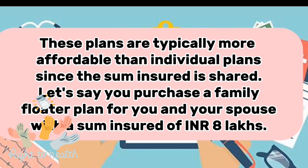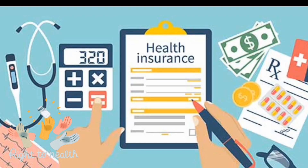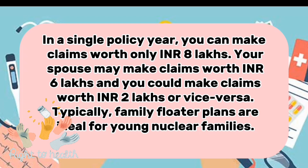Let's say you purchase a family floater plan for you and your spouse with a sum insured of 8 lakh rupees. In a single policy year, you can make claims worth only 8 lakh rupees. Your spouse may make claims worth INR 6 lakh and you could make claims worth 2 lakh rupees, or vice versa.